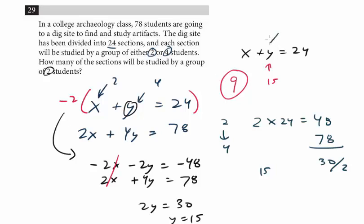15 is the number for 4, groups of 4, and so then you could end up with 9 as well. So hopefully you remember this technique. I think it works really well with the system of equations.